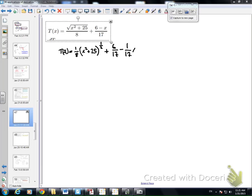And then I'm also going to take this 17 and distribute it into the 6 and the negative x. So instead of writing it as a whole fraction, I'm going to write it as 6/17 minus 1/17 times x.